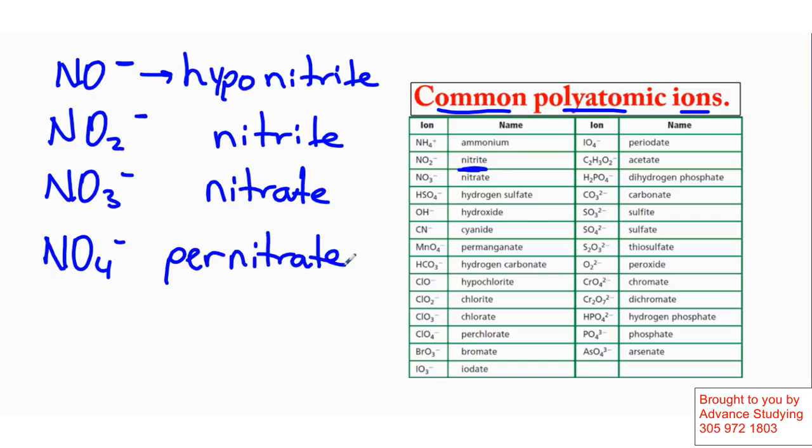So if you look at the difference, on the one with the least amount of oxygen, I have the addition of hypo at the beginning and ending in -ite. That's hyponitrite. Then I have the NO2, which is just -ite ending. I keep adding oxygens, and I have -ate ending. And I have the one with the highest oxygen content, which is pernitrate. So -ate, anything -ate is higher than anything -ite.